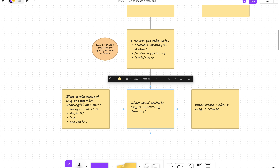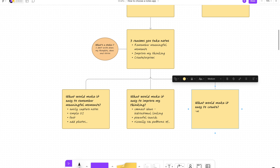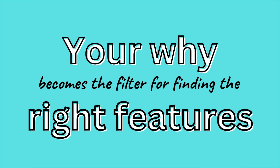Number two, what would make it easy to improve my thinking? Things like the ability to connect ideas — bidirectional linking, powerful search, and maybe the ability to visually see the patterns of thought and ideas. And then what would make it easy to create and express? Maybe it works well with other apps, it's easy to share with multiple sharing options, and it's easy to write in — because if I'm creating articles or written content, I need to write easily in the app.